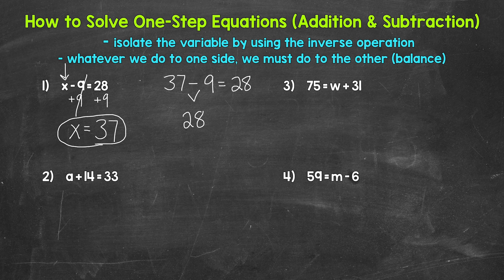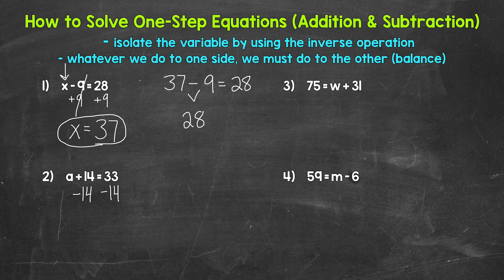Let's move on to number 2, where we have a plus 14 equals 33. So what plus 14 equals 33? What's the inverse operation — what's the opposite of addition? Well, subtraction. So let's subtract 14 from the left side of the equation. Whatever we do to one side, we must do to the other. So let's subtract 14 from the right side as well. On the left side of the equation, we are adding 14 and subtracting 14, so these 14s cancel each other out. A, our variable, is now isolated. So A equals, and then on the right side, 33 minus 14 gives us 19.